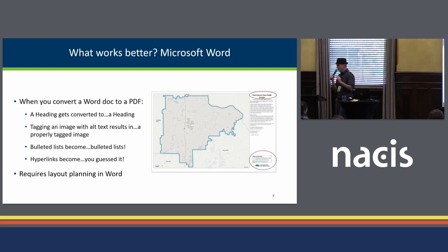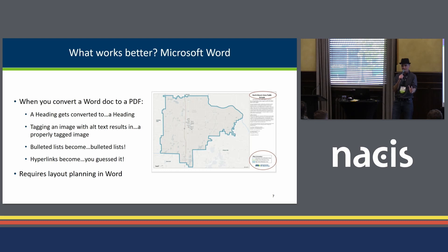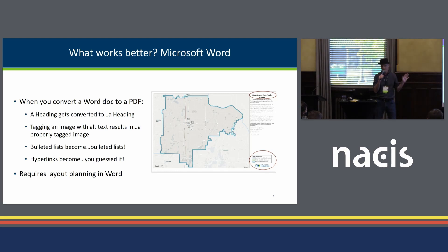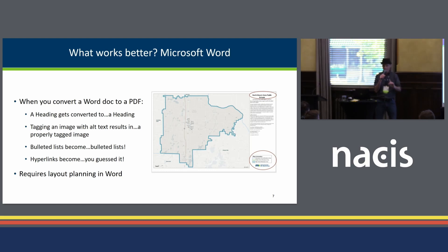What works better? Believe it or not, Microsoft Word works better. Think about it — if you've got a heading in Word and you convert that to PDF, the PDF knows it's a heading. If you've got alt text on your image in Word and you convert that to PDF, the PDF recognizes and reads the alternative text. Same thing for lists, same thing for hyperlinks. So if you can do layout planning of your map in Word — which I know is unusual and completely foreign to us, but it's not impossible — you can use this method to script out as many maps in Word as you want, and then batch convert those to PDF.